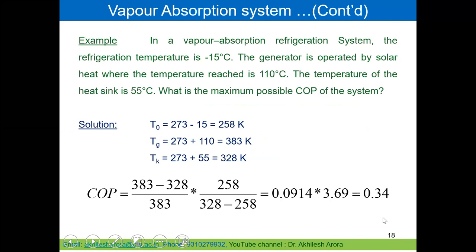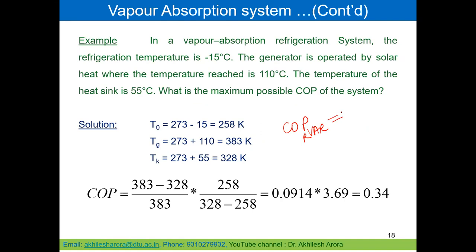We were discussing the vapor absorption system and have derived an expression for COP. For a reversible vapor absorption system, the maximum COP is given by: (1 minus T_k divided by T_g) multiplied by (T_naught divided by T_k minus T_naught).